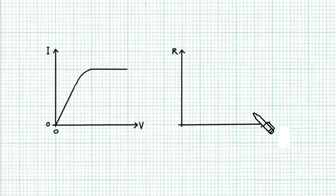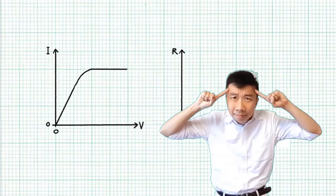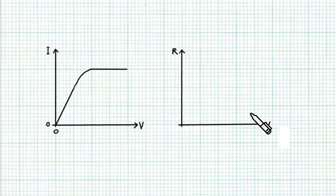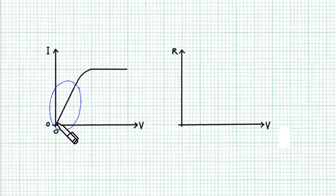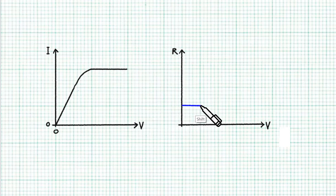So go ahead, make your sketch and when you are ready, come back for the explanation. The first thing you should note is that this part of the I-V characteristic graph is a straight line passing through the origin. So up to this voltage, this mysterious component is an ohmic device with a constant V to I ratio, meaning we have a constant resistance. So we start with a horizontal line.